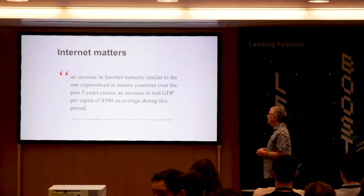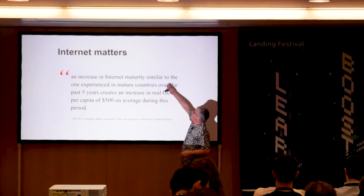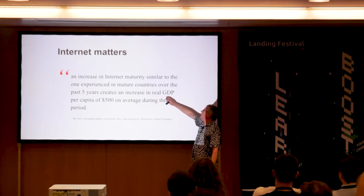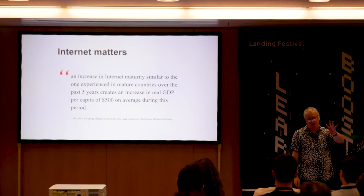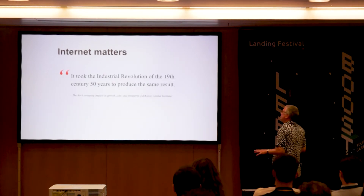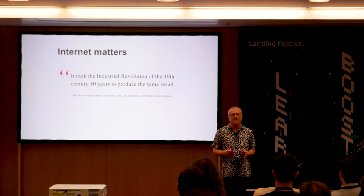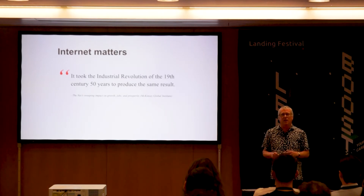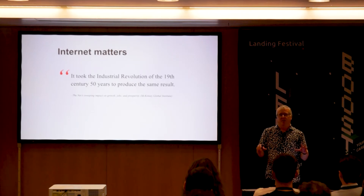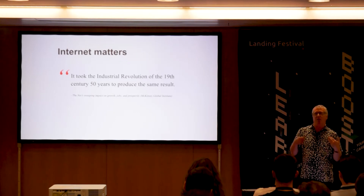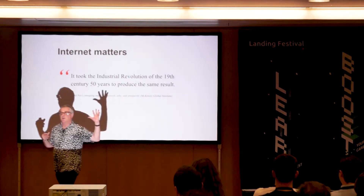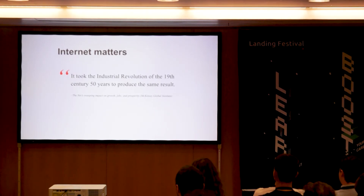McKinsey, a management consultancy, said: an increase in internet maturity similar to what mature countries experienced over the past five years creates an increase in real GDP per capita of 500 US dollars. To put that in perspective, it took the industrial revolution of the 19th century 50 years to produce the same result. So you are the new Thomas Edisons, the new Teslas, the new Isambard Kingdom Brunels — you are the people driving this hyper-fast industrial revolution. You can choose to clog up the wire with massive autoplaying videos and gigantic JavaScript libraries, or you can use HTML right, make it sleek and performant, and give the websites you produce to your next customers.